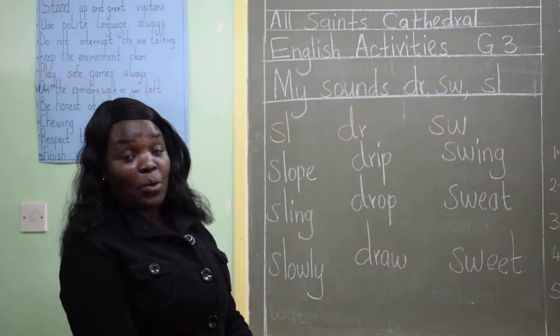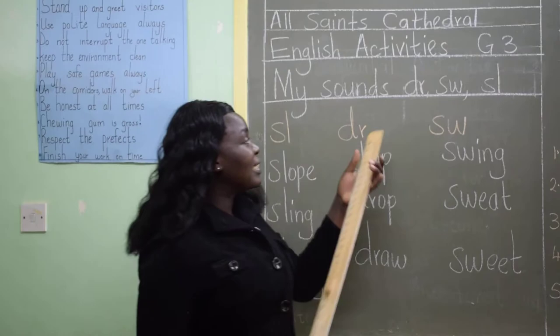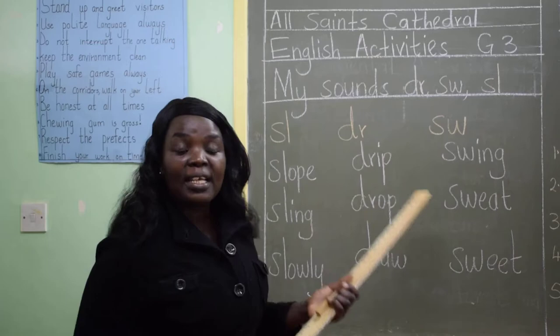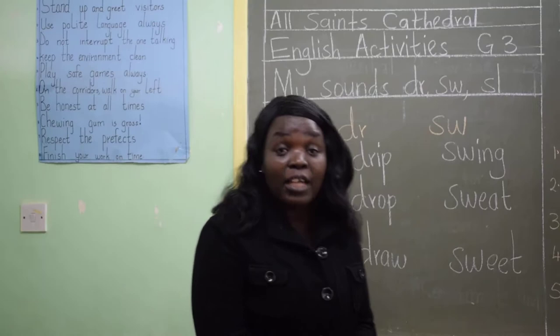Today we are going to look at three blends. The first one is the DR blend, the second is SW, and the third is SL. Those are three blends — we want to find some words that start with those blends, and also learn how to pronounce them.